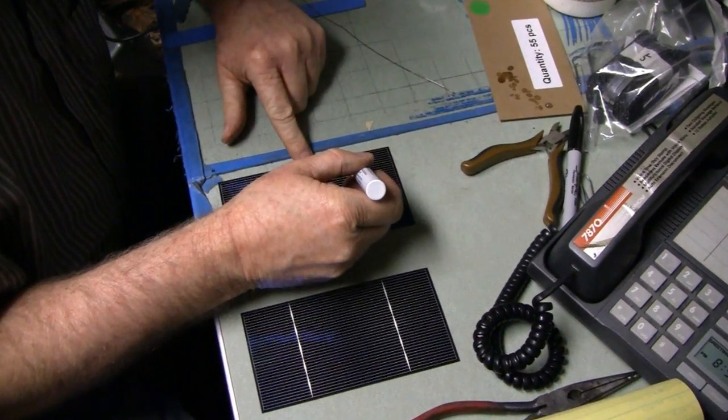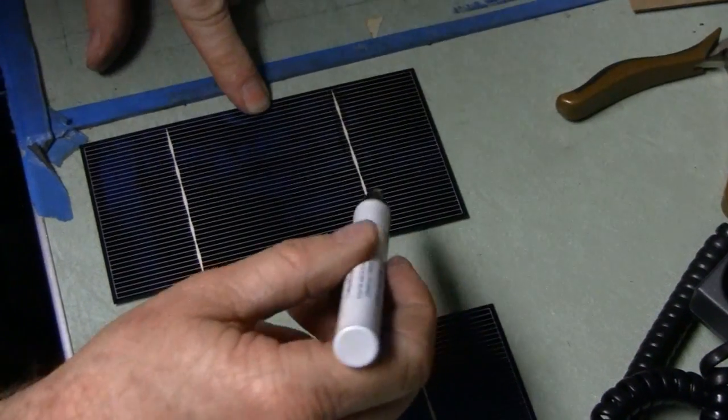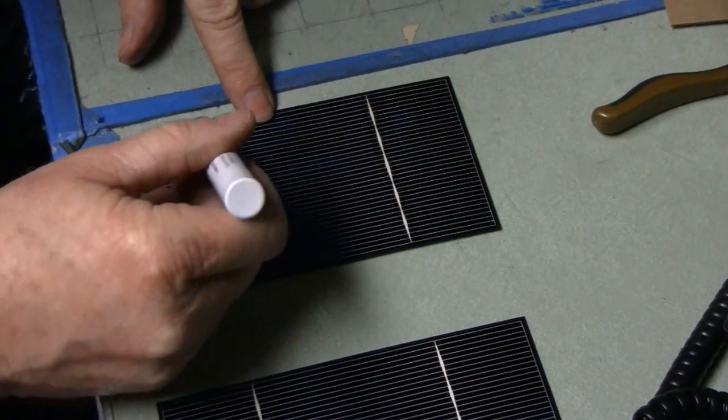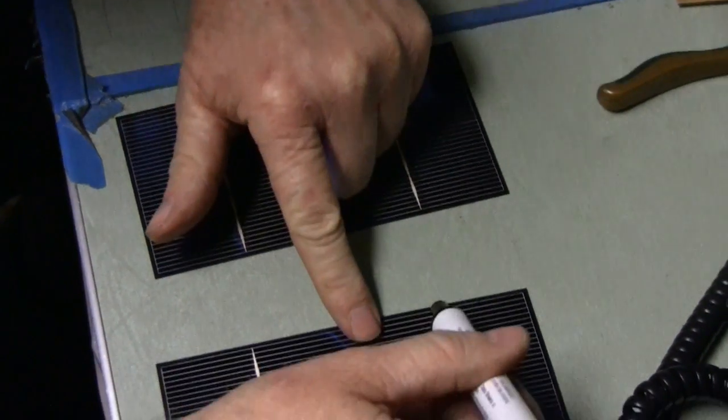I call it a resin. I killed myself, it's rosin. Rosin flux pen and just run the rosin down here where we're gonna solder. I got two of these here. I'm gonna do two at once, that's just how we roll.